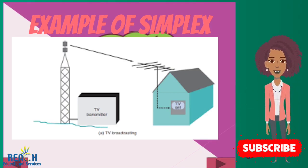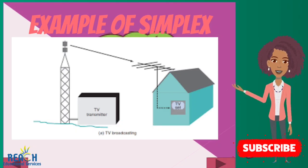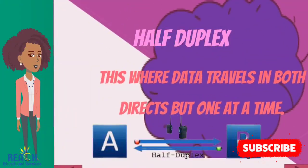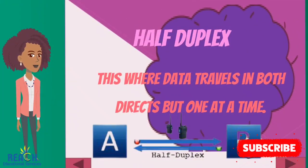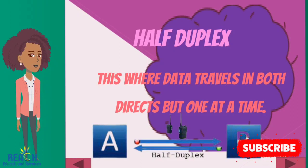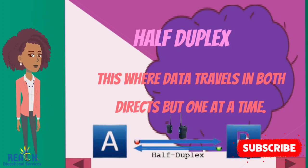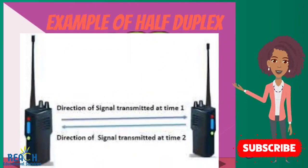Now that we're clear on what simplex is, let's move right along to half duplex. Half duplex is where data travels in both directions but one at a time. For example, say they were fixing the road and vehicles are unable to travel at the same time — the person in charge would allow traffic from one end to pass through first, after which vehicles from the other end would proceed. That's exactly how half duplex works. An example of half duplex is the walkie-talkie, where one person has to finish speaking before the other can respond.